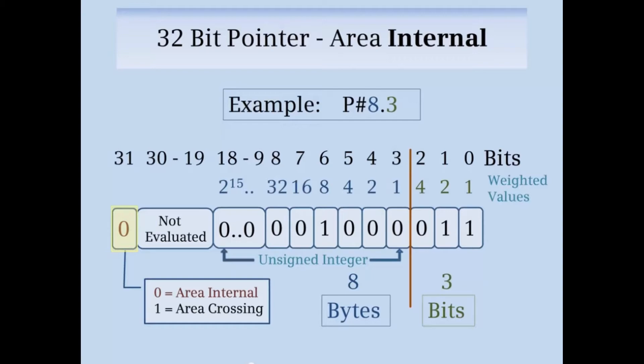If bit 31 of the double word is 0, the pointer is area internal, and if it is 1, it is an area crossing pointer.